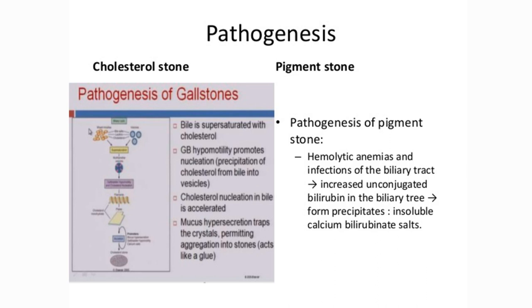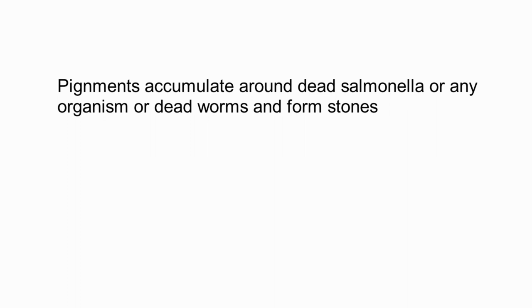The pigment from hemolysis combines with calcium salt to form a complex stone. This is a pigmented stone form. And lastly, this is the mixed stone, which is the most common, and it is multiple in the gallbladder.